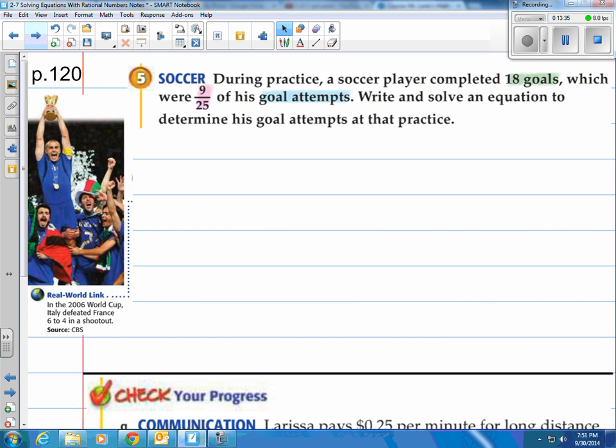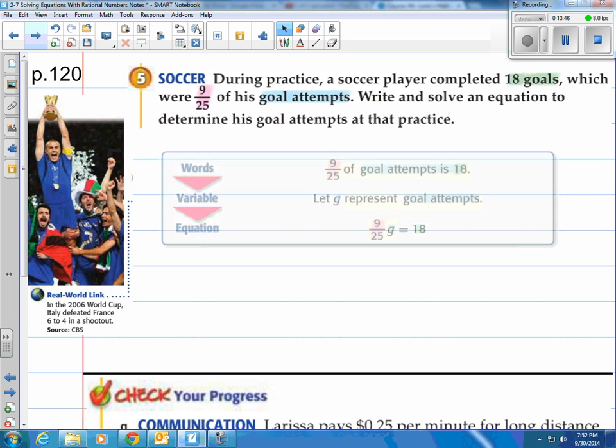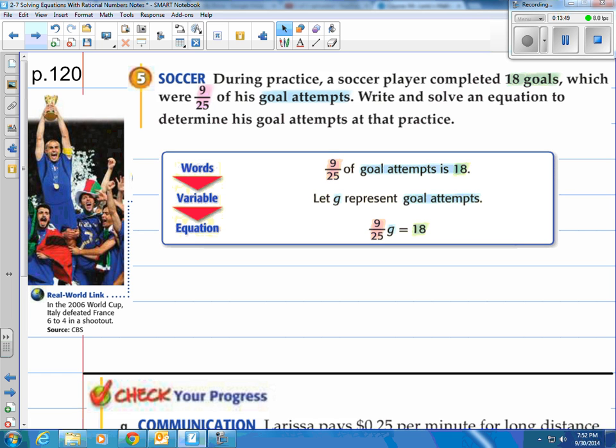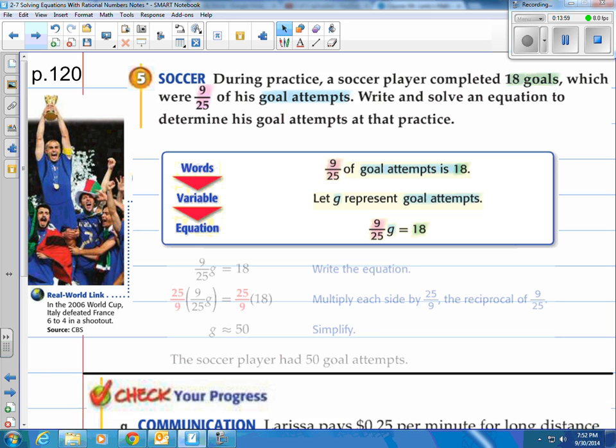Here at number 5, it says, During practice, a soccer player completed 18 goals which were 9/25 of his goal attempts. Write and solve an equation to determine his goal attempts at that practice. Well, if you take a look, they break it out for you. You're looking for 9/25 of the goal attempts. And that's going to be 18. So they tell you g is going to be the goal attempts. Then you multiply that by the 9/25. And that's got to equal 18. Then they go ahead and solve it for you. Notice how they're multiplying by the reciprocal or the flip of the fraction. And they do the math for you in their heads here. And they say that's 50. So the soccer player had 50 goal attempts. And he made 9/25 of those.